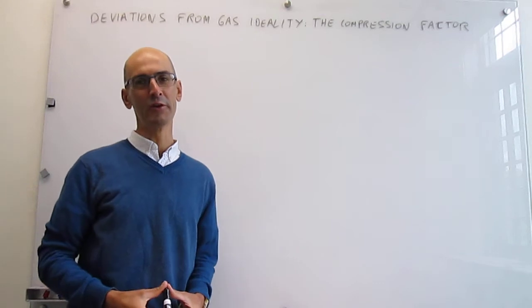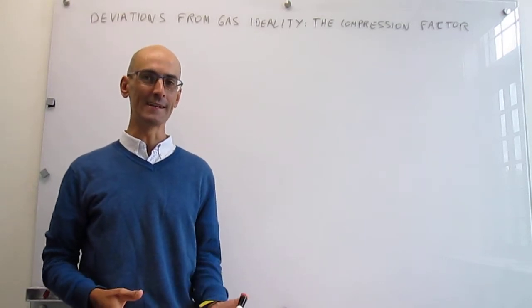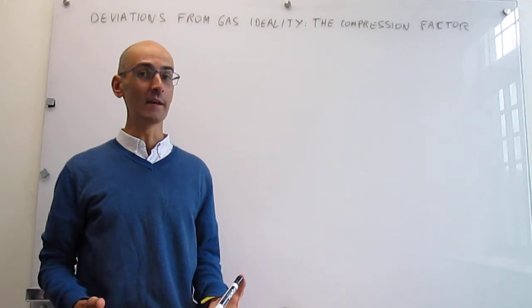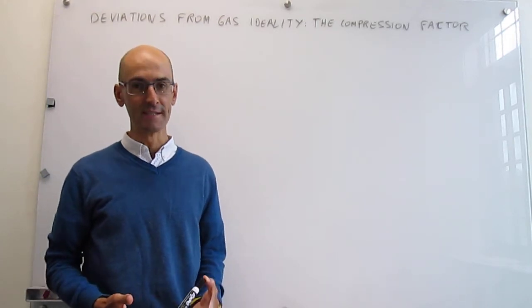In the last video we learned the equation of state for ideal gases. In this video we examine what happens when ideal behavior is not warranted.